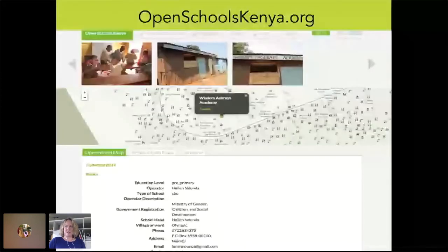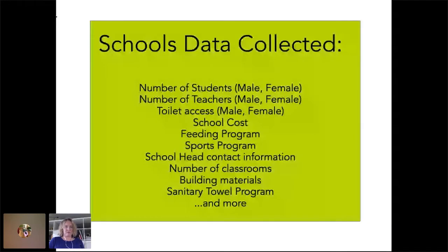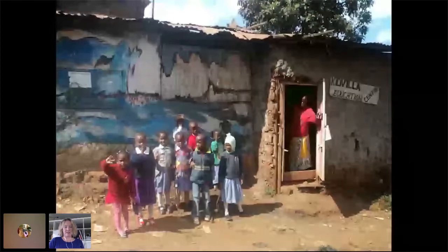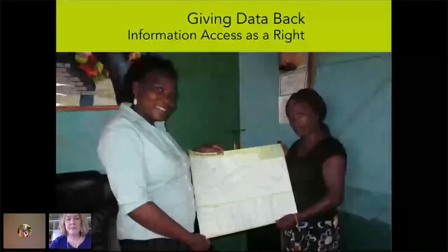Another thing we've done locally, mostly in Kibera, is map a lot of schools. We have the Open Schools Kenya project, ongoing for a few years in several informal settlements, mapping particularly small informal or alternative non-governmental schools. We collect lots of data about what each school offers, and this is done in collaboration with the schools. We always focus on giving data back — a kind of right to information.